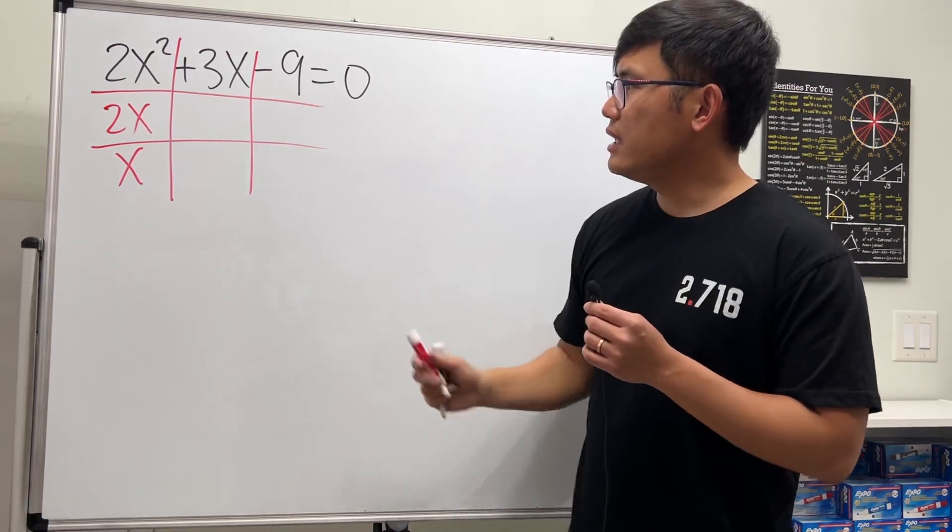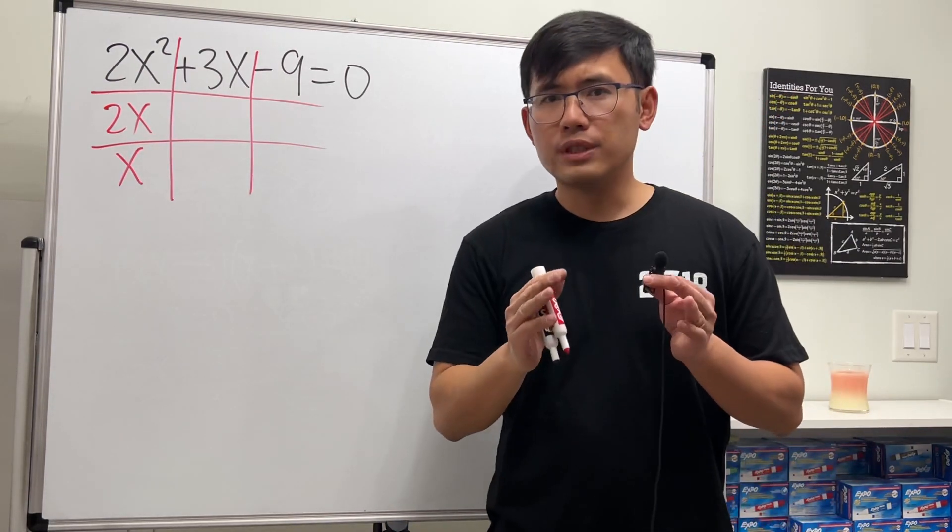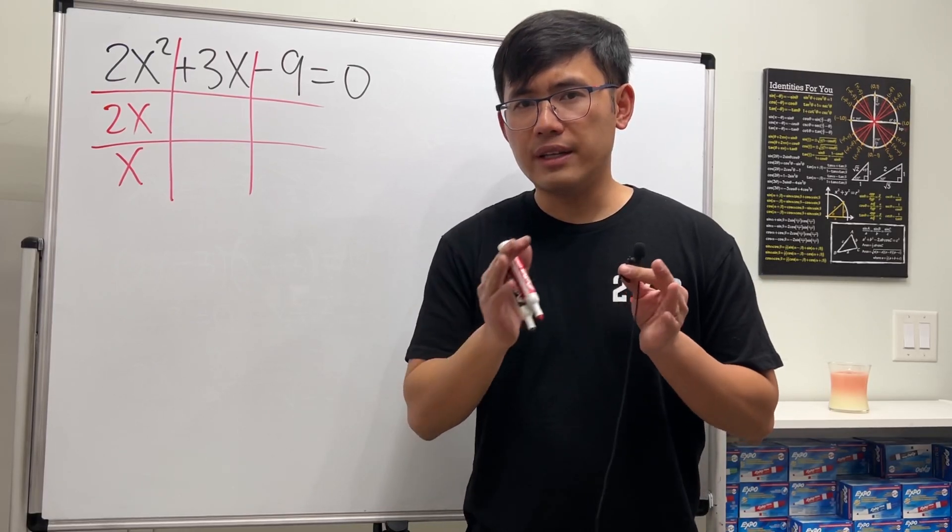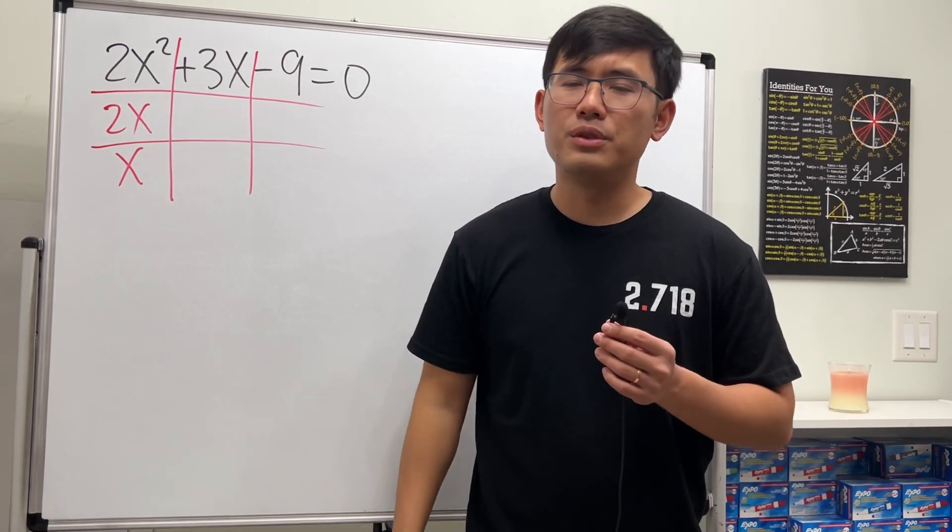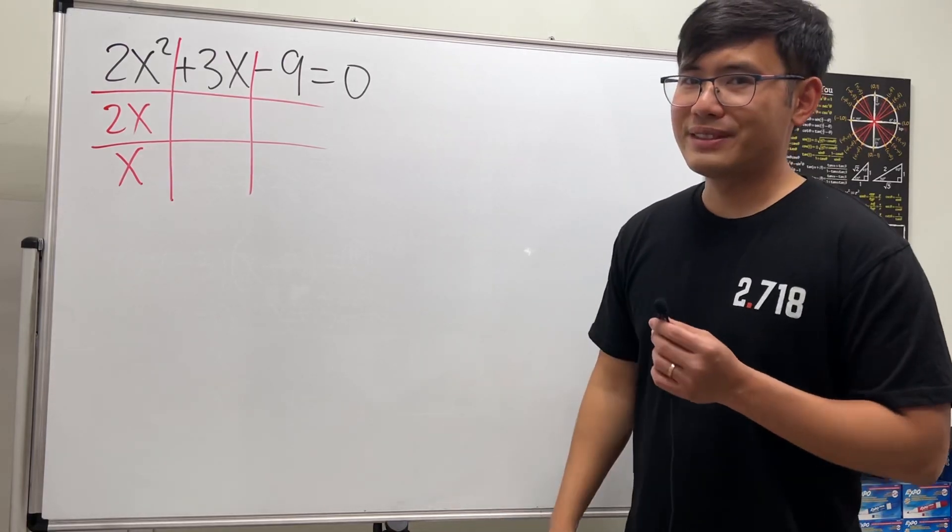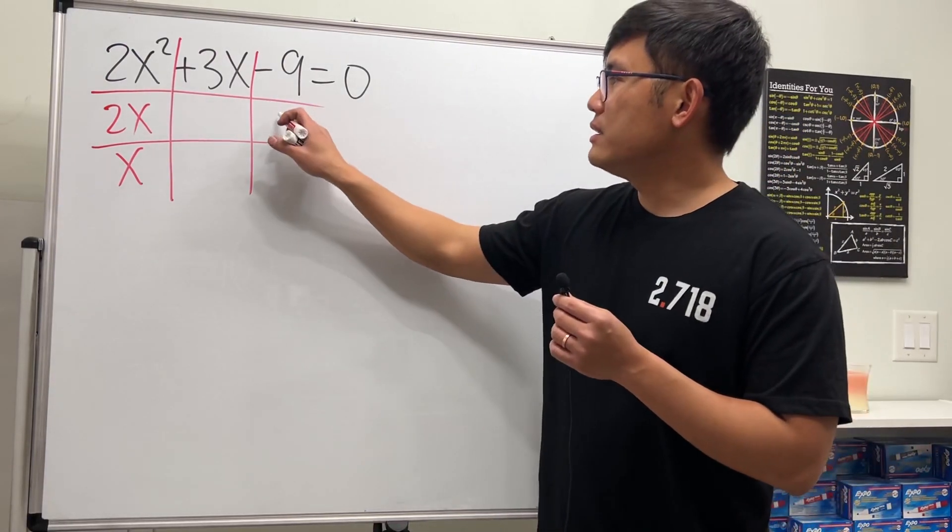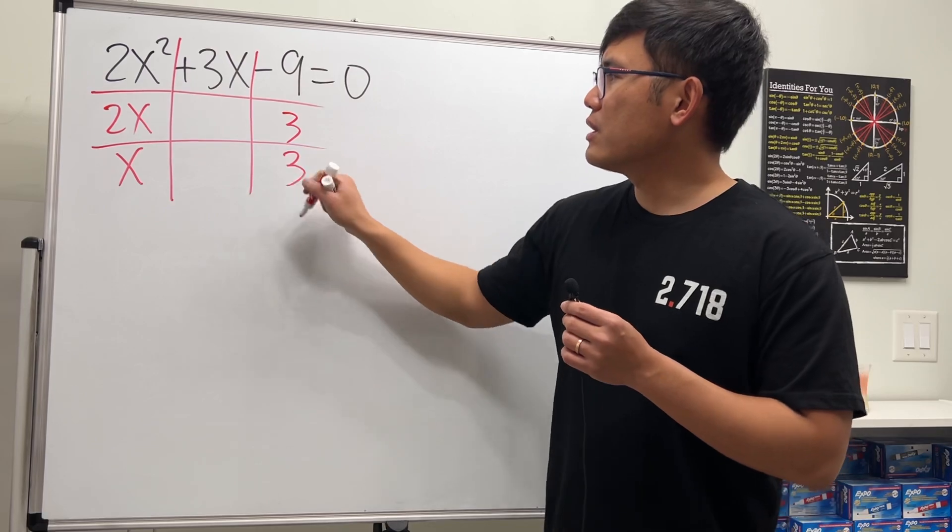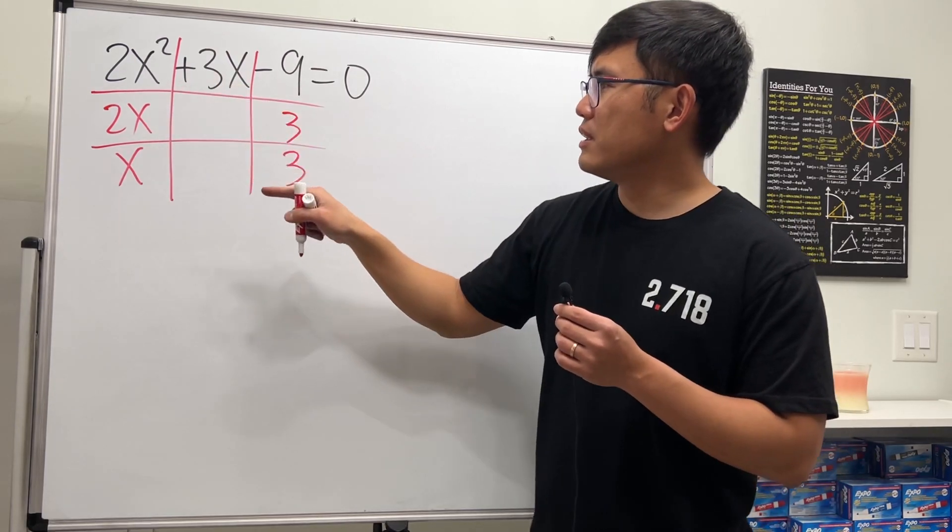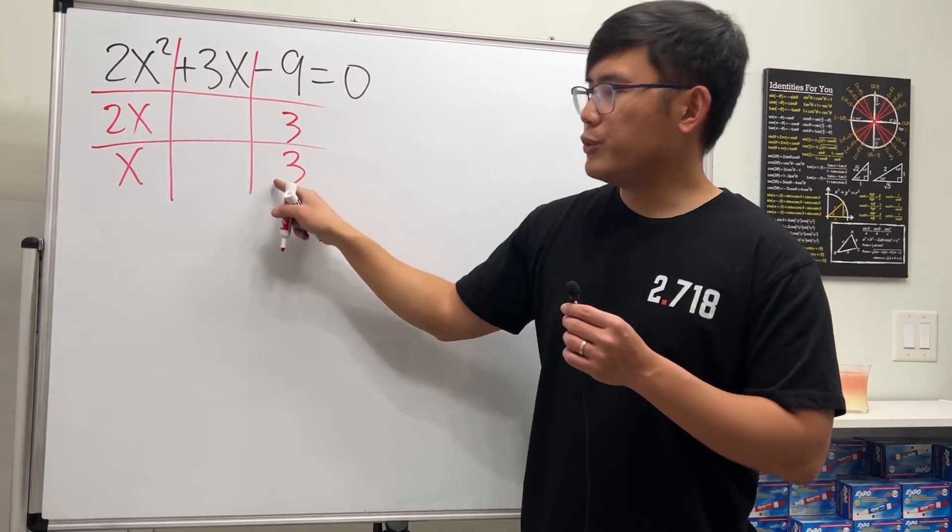To get 2x squared, we just need 2x times x, that's the only combination. To get negative 9, we can use 1 times negative 9, or negative 1 times 9, or maybe even 3 times negative 3. Which one is correct? I will tell you, we need 3 and 3 here.